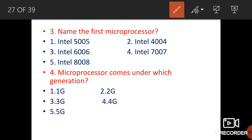Name the first microprocessor. The answer is not Intel 5005, not Intel 6006, and not Intel 8008. The correct answer is Intel 4004 — that was the first microprocessor.